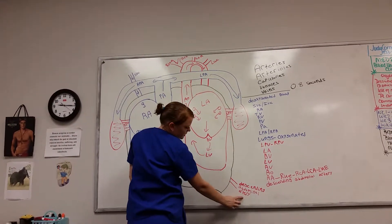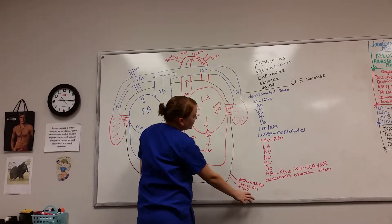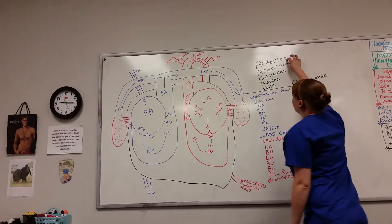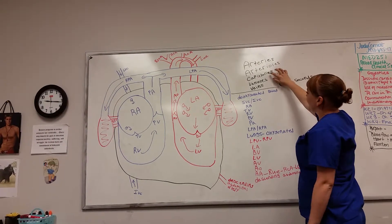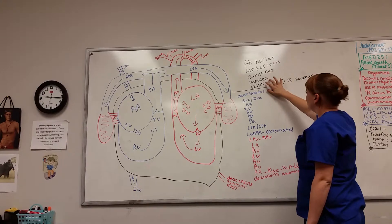It goes into the descending abdominal artery, which branches off into the arteries. They then move to the capillaries, the venules, and the veins.